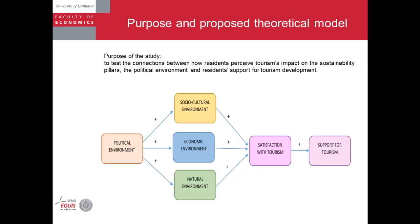Therefore, we propose a theoretical model which takes into account the political environment itself to influence the socio-cultural environment, economic environment, and natural environment — the three pillars of sustainable tourism theory — to directly impact satisfaction with tourism, and further on the support for tourism in terms of residents. The purpose of the study was to test the connections between how residents perceive tourism impacts on the sustainability pillars, the political environment, and resident support for tourism development.